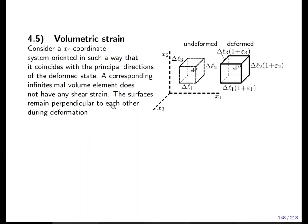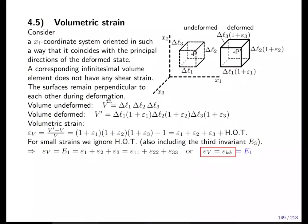Taking that picture, instead of calculating the length and the change of length, we can calculate the volume in the original position and the deformed volume. The deformed volume is the product of the lengths. In the original case it is just the three delta l's, and the new definition is the three delta l's multiplied by one plus epsilon one, multiplied by one plus epsilon two, multiplied by one plus epsilon three.